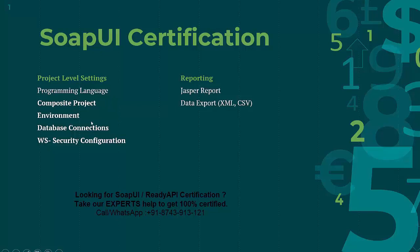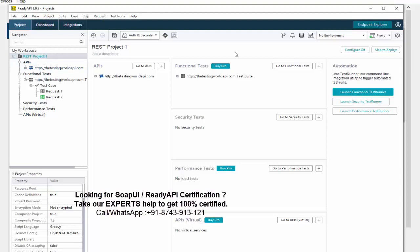Next is environment, which is also very important from the certification point of view. For example, I want you to execute test cases in the QA environment today, and later in UAT or dev environment. We have different environments in a project and we should make our test cases in such a way that they can be executed in any environment. The problem is that in SOAP UI we often give fixed URLs, usernames, passwords, and database connections. We need to configure different environments so we can test our API across them.